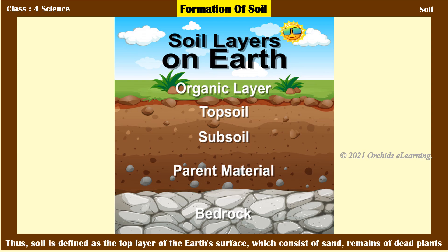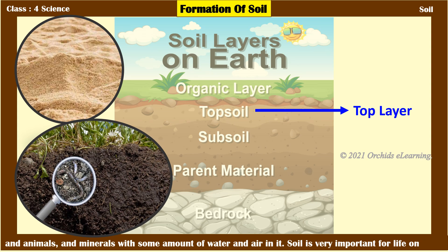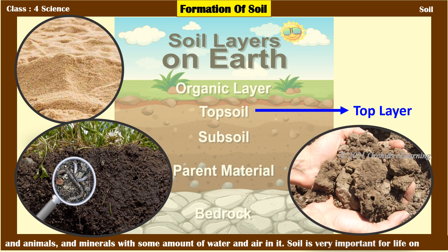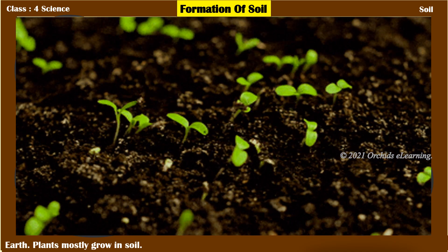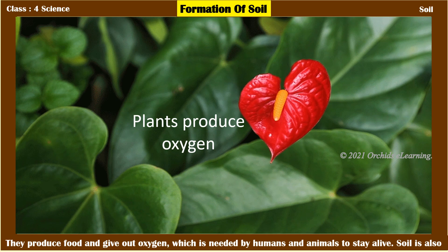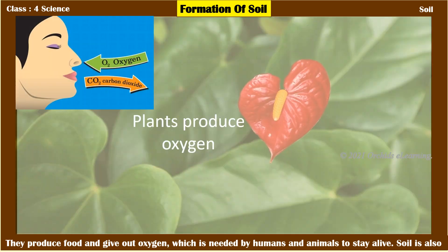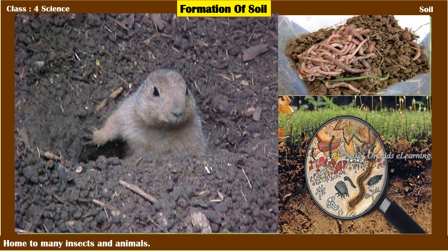Soil is defined as the top layer of the earth's surface, which consists of sand, remains of dead plants and animals, and minerals with some amount of water and air in it. Soil is very important for life on earth. Plants mostly grow in soil; they produce food and give out oxygen, which is needed by humans and animals to stay alive. Soil is also home to many insects and animals.